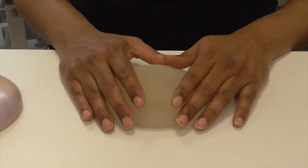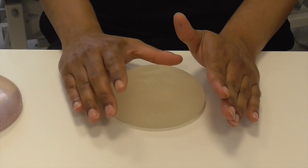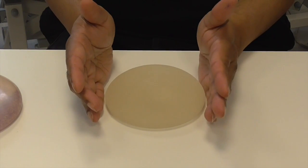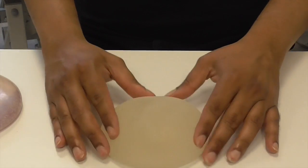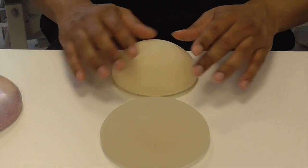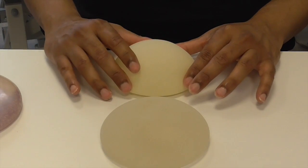However, with the silicone shell being smooth, there's about a 40 percent chance of something called capsular contracture. To reduce that, there are two types of innovations: one is the texturing and the other is to coat the silicone shell with something called polyurethane.